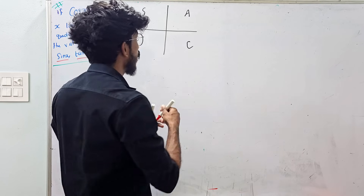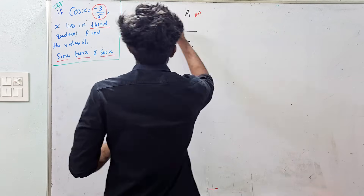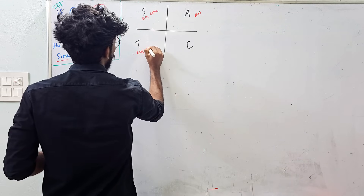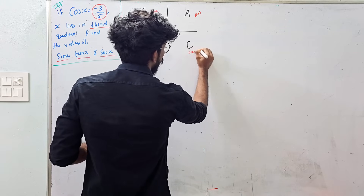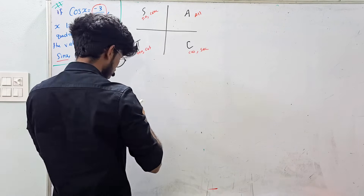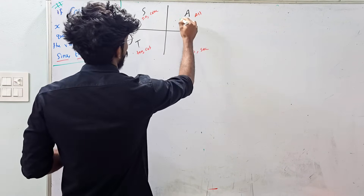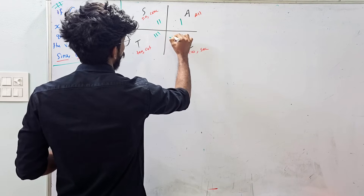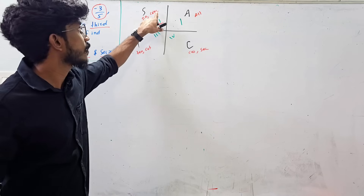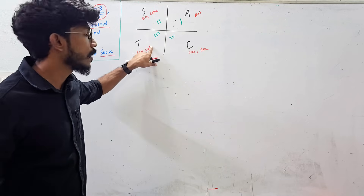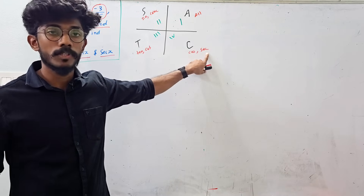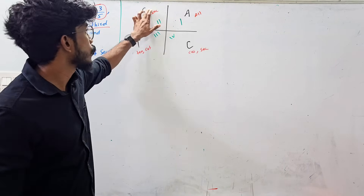You can add all the trigonometry values using the shortcut: add sugar to coffee. This tells you which trig functions are positive in each quadrant. First quadrant — all positive. Second quadrant — sin positive. Third quadrant — tan positive. Fourth quadrant — cos positive. This is the 'add sugar to coffee' shortcut.